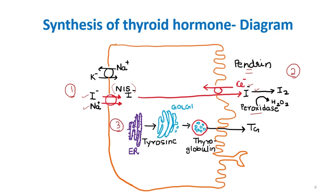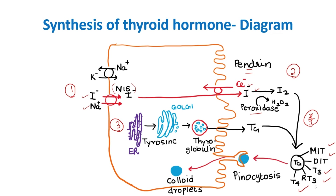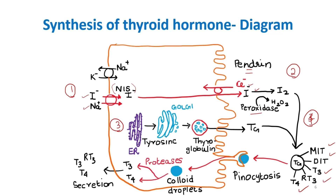The fourth step is the coupling reaction, wherein thyroglobulin gets coupled with iodine to form MIT (monoiodotyrosine), DIT (diiodotyrosine), T3, reverse T3, and T4. The coupled thyroglobulin is then taken into the cell by pinocytosis as colloid droplets. The fifth step is proteolysis: proteases act on these colloid droplets and convert them to T3 and T4. The secretion of thyroid hormone is the sixth step.